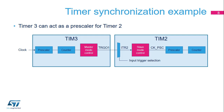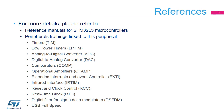This slide shows a simple example of timer synchronization. Timer 3 is used as the master timer and can reset, start, stop, or clock timer 2 configured in slave mode. In this example, timer 3 is clocking timer 2 so that it acts as a pre-scaler for timer 2.